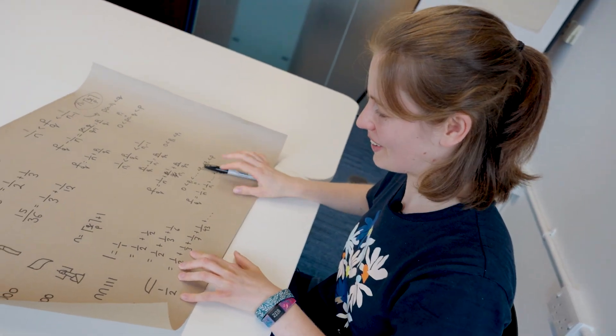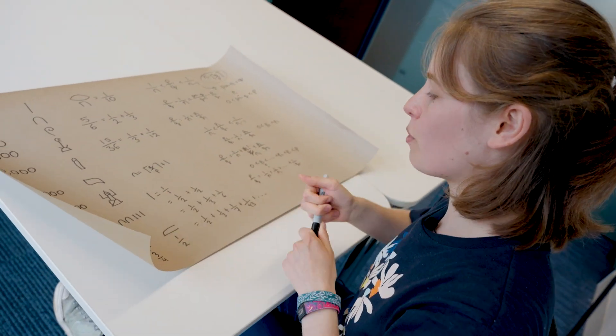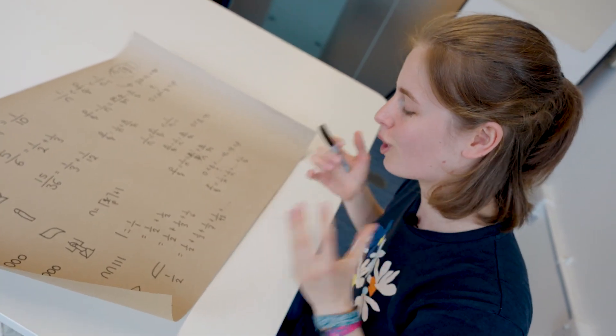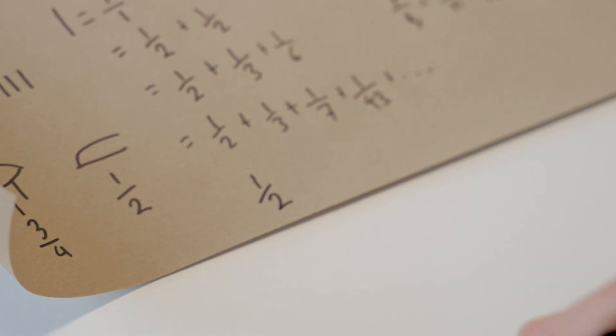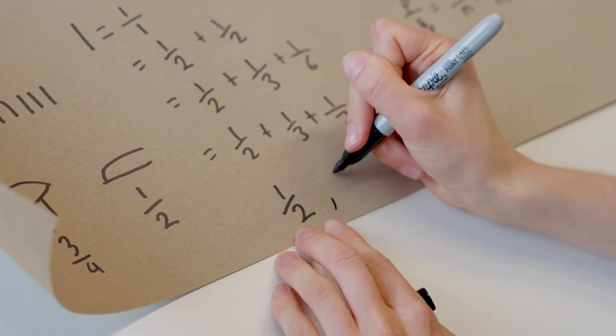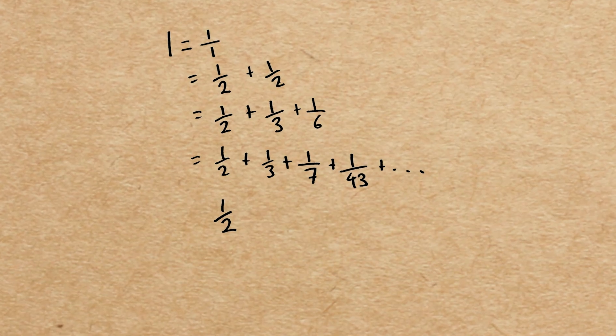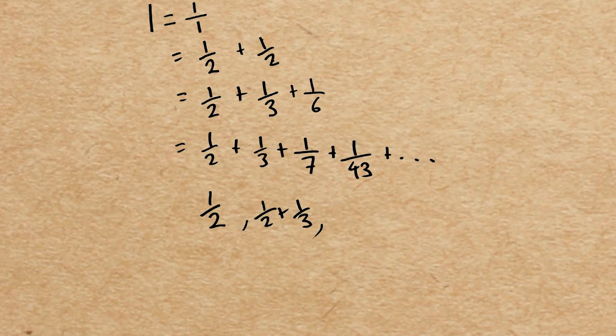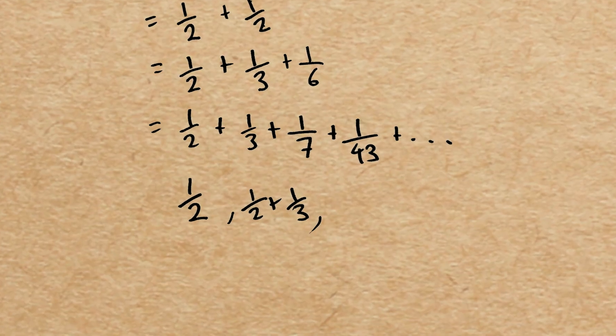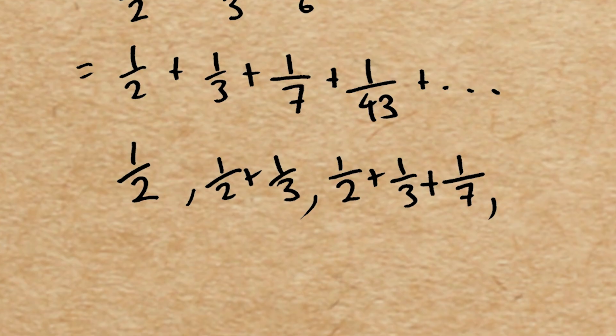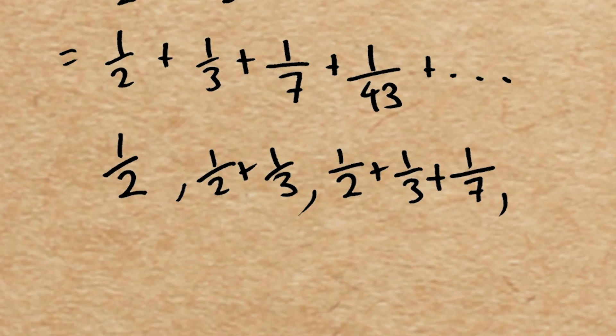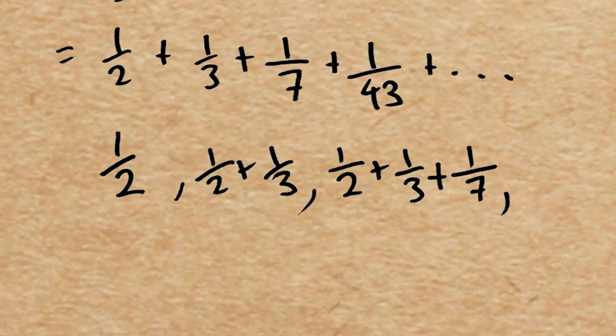This is the cool thing as well. Because here, if at any point we truncate it, it gives the Egyptian fraction closest to one for that many terms. So a half is the Egyptian fraction with one term closest to one. A half plus a third is the Egyptian fraction with two terms closest to one. A half plus a third plus a seventh is the Egyptian fraction with three terms closest to one. And I just think it's really cool.